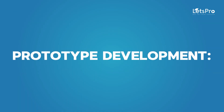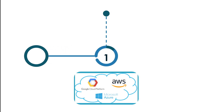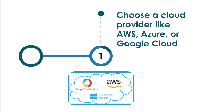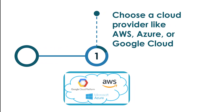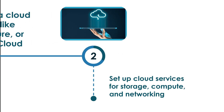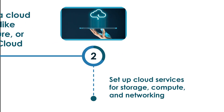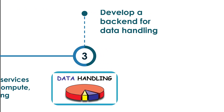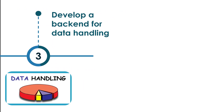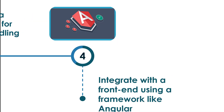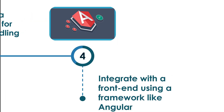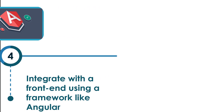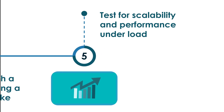For prototype development: choose a cloud provider like AWS, Azure, or Google Cloud, set up cloud services for storage, compute, and networking, develop a back-end for data handling, integrate with the front-end using a framework like Angular, and test for scalability and performance under load.